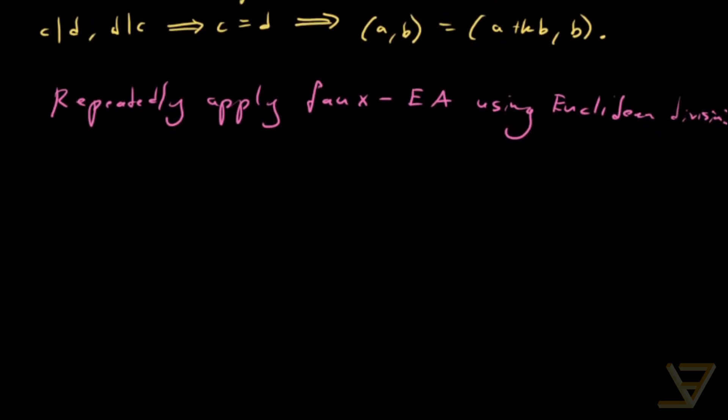So instead of showing you a general algorithm with all sorts of remainders and quotients and variables, I'm just going to show you what this looks like in practice. Let's say we're trying to find the GCD of 48 and 18. Then what we do is we find the remainder and quotient of 48 divided by 18.